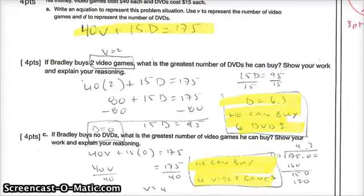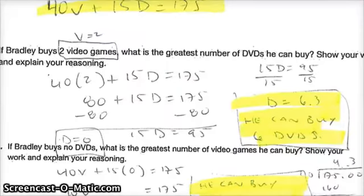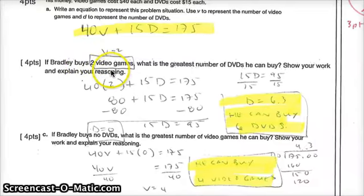Question number 2. If Bradley buys 2 video games, what is the greatest number of DVDs he can buy? Show your work and explain your reasoning. Well, 2 video games means V is equal to 2. So here's the reason why we use equations. You can substitute in there 2. 40 times 2 is 80 on video games.